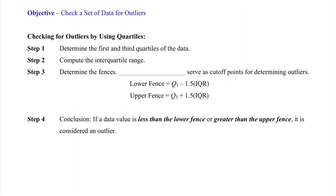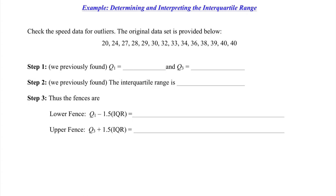Our next objective details what an outlier is. We have steps to determine if something is an outlier. Step one: determine the first and third quartiles of the data. Step two: compute the IQR. Step three: determine the fences. Fences serve as a mathematical cutoff to determine outliers. Once we construct our fences, we can determine if a data value is less than the lower fence or greater than the upper fence, and therefore an outlier. For our speed data, Q1 is 28, Q3 is 38, and the IQR is 38 minus 28, which equals 10.